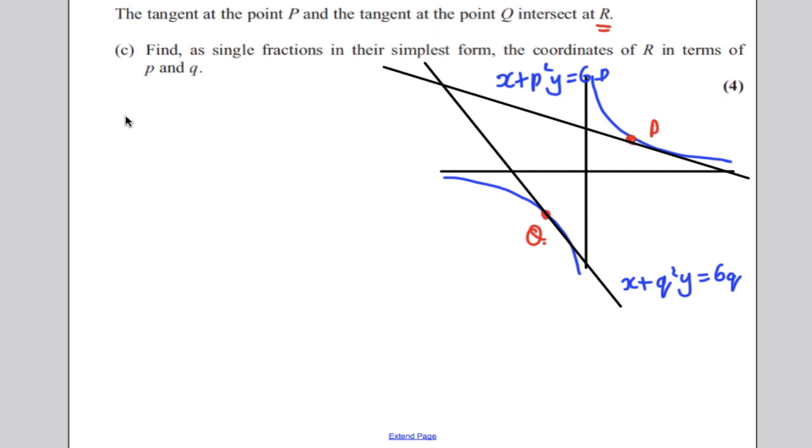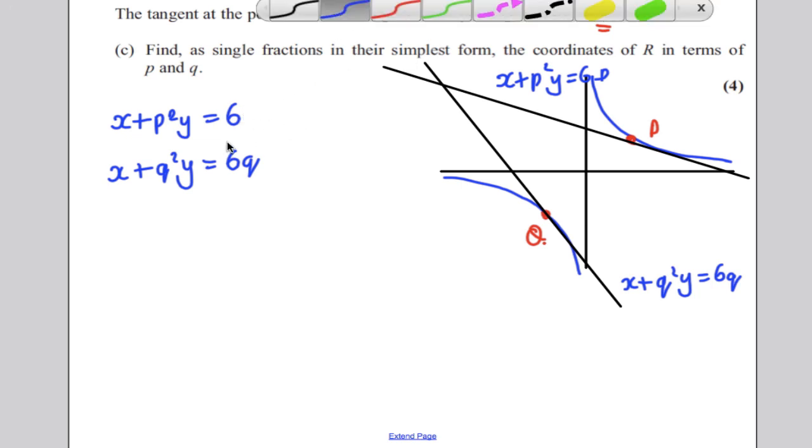So we're trying to find where these two lines intersect. So they're basically two simultaneous equations, so let's write them down. x + p²y = 6p. And x + q²y = 6q. Now, we're trying to solve these simultaneously. There's equation one, there's equation two.